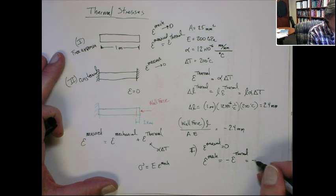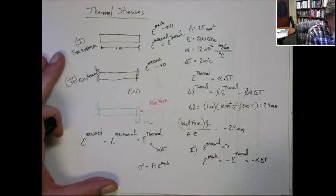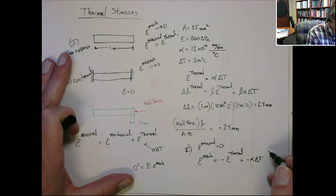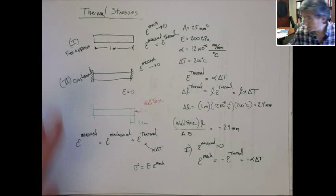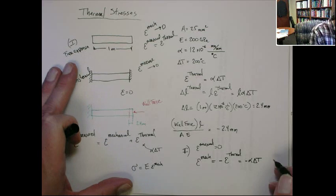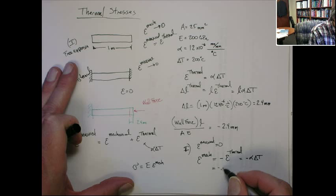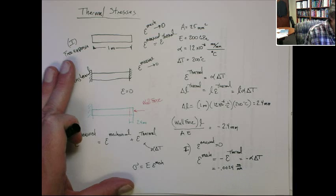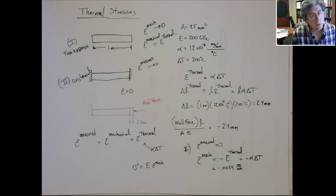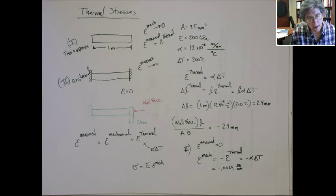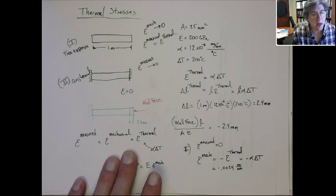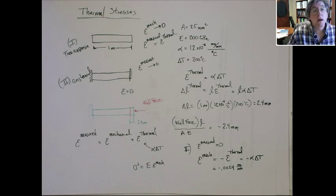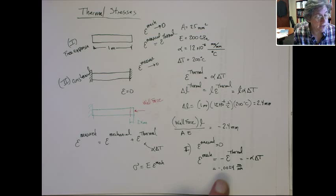Alright, so that means that the mechanical strain is equal to the negative of the thermal strain, which is minus alpha delta T. In this situation, that would be negative 0.0024. Right? So that's interesting, right? So raising the temperature causes expansion, but using this additive decomposition of the strain, you can see that we can determine that the mechanical strain is negative of the thermal strain. So it is negative 0.0024. Alright?